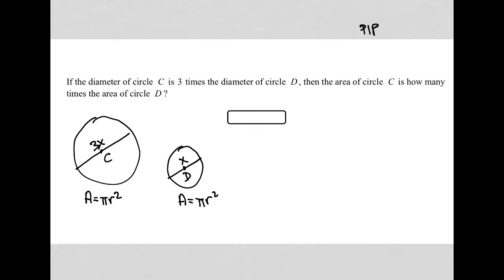So I'm going to throw another strategy in here that I call plug-in your own number. And I do that because I just feel like this question would be so much easier if I had real numbers here instead of x and 3x. So what would be a good number to use that I can take half of and take a third of? I think 6. So if I make this 6 and I make this 2, then it's true that circle C's diameter is three times that of circle D, and it's easy to find the radius.